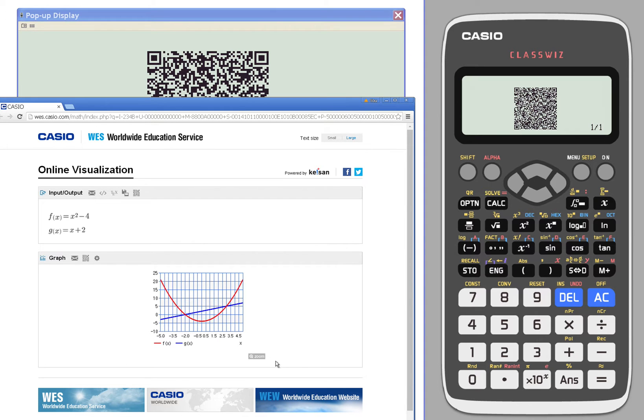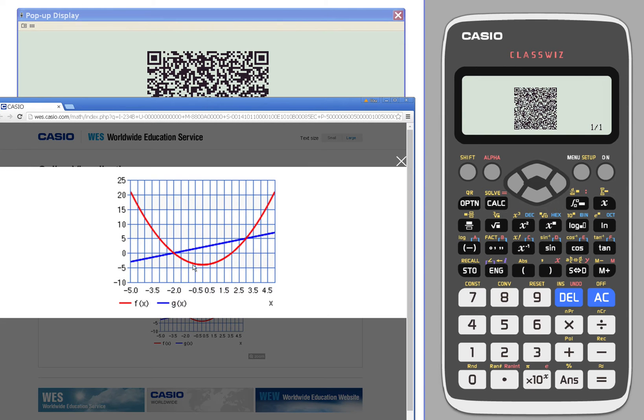And you get a graphical representation of what we were just looking at. Here's your two functions f(x) and g(x), and here is our graph which shows us a graphical representation of what we were looking for earlier, which is the solution: negative two gives me zero and three gives me five.